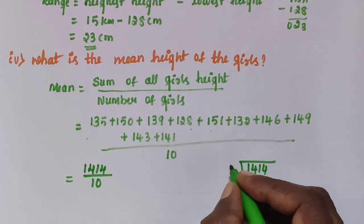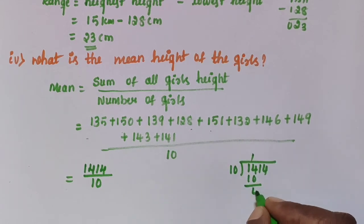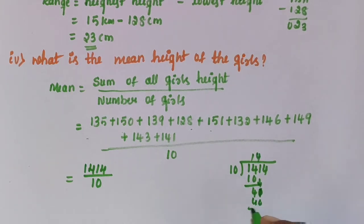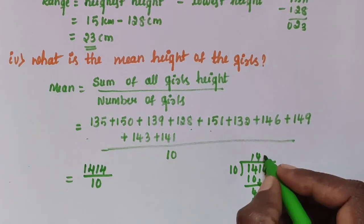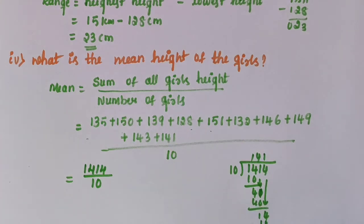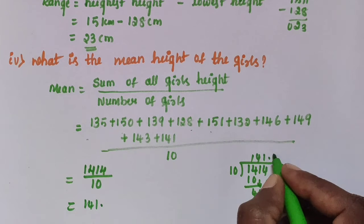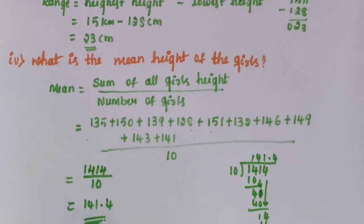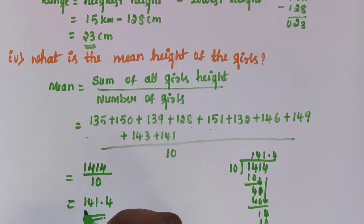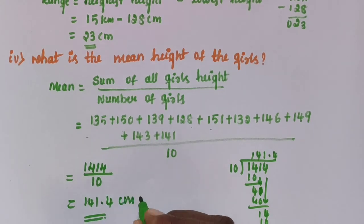1414 divided by 10: the answer is 141.4. So 141.4 centimeters is the mean height of the 10 girls.